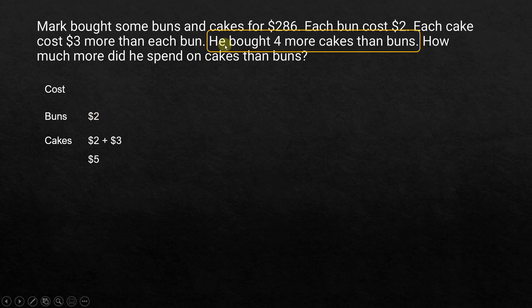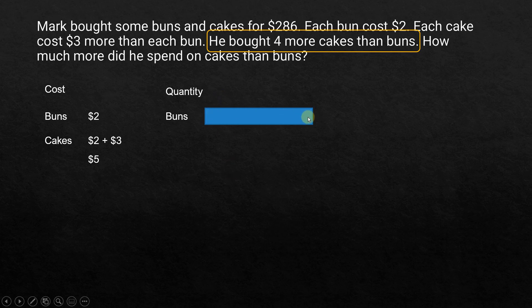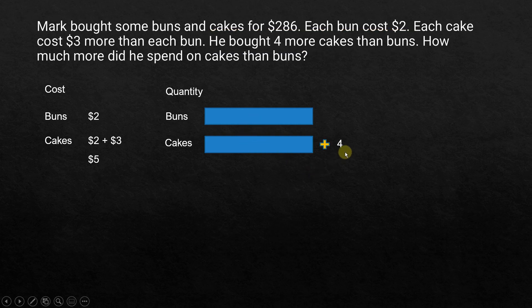The next statement is: he bought 4 more cakes than buns. Now we are talking about quantity. We don't know how many buns he bought, so let's assume this diagram here — one box shows the number of buns he bought. For cakes, he bought 4 more, so that's the same amount as buns plus 4 extra cakes.